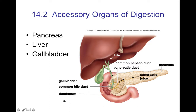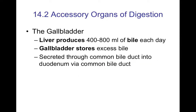The accessory organs of digestion are the liver, which makes bile; the gallbladder, which stores bile; and the pancreas, which makes pancreatic juices. All of these feed into the duodenum. If the gallbladder is removed — a very common procedure — bile is stored in the common bile duct or hepatic duct instead, like storing things in a hallway when a closet is removed. A person can exist just fine without the gallbladder.